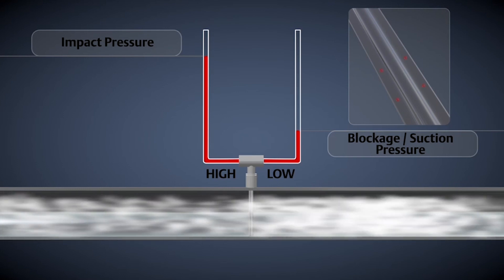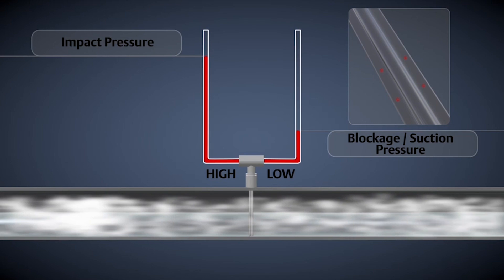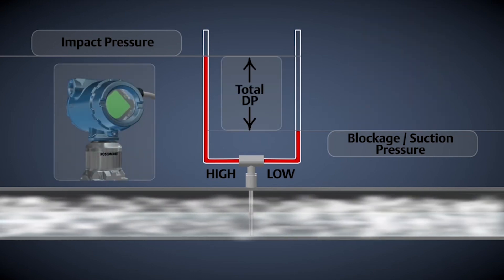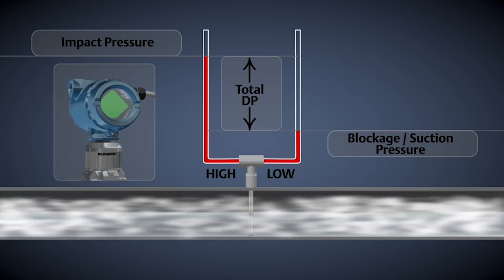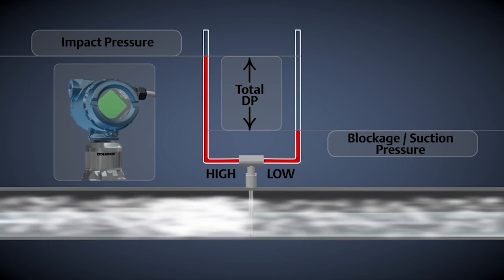The low pressure is sensed by the holes on the back side of the sensor. The difference between the high pressure reading on the front side of the bar and the low pressure on the back is the differential pressure sensed by the DP transmitter.